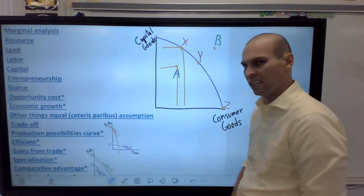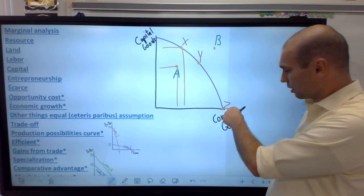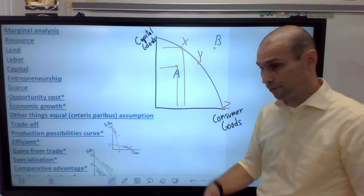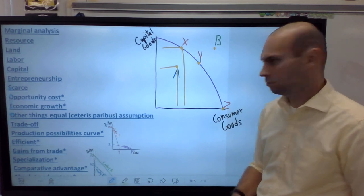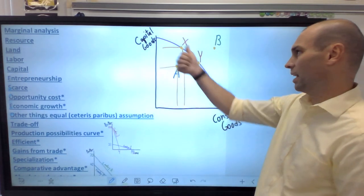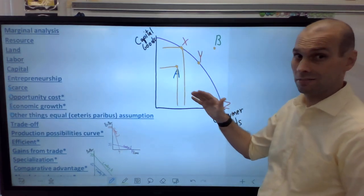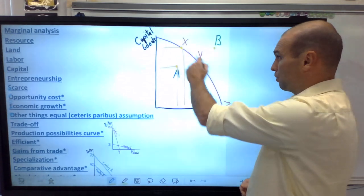We're employing all our resources best we can. So anything on the curve like X, Y, and Z, those are all perfectly efficient. On the other hand, point A is inside the curve, which means at point A, we will get less capital goods and consumer goods than we would at point X, which means if we're at point A, we are inefficient. We're underproducing and we can produce more at no cost. So think if I went from A to X, I get more capital goods and more consumer goods. And what did I have to give up? Nothing.